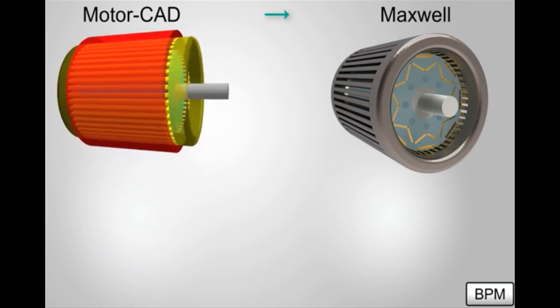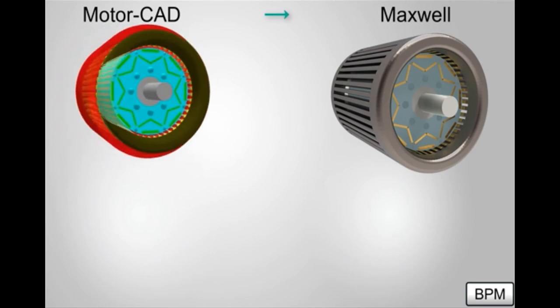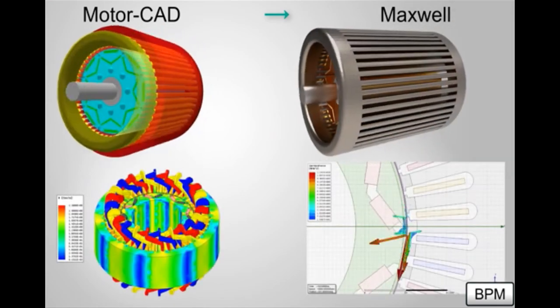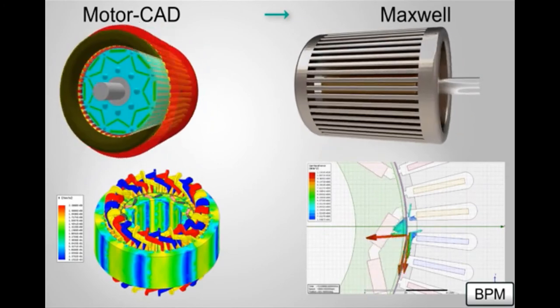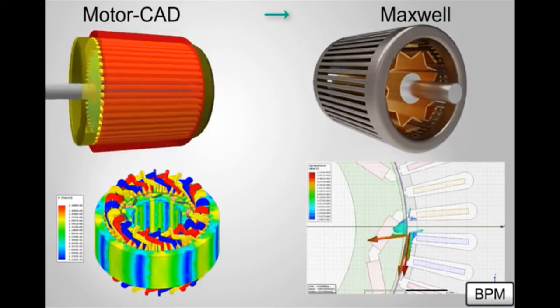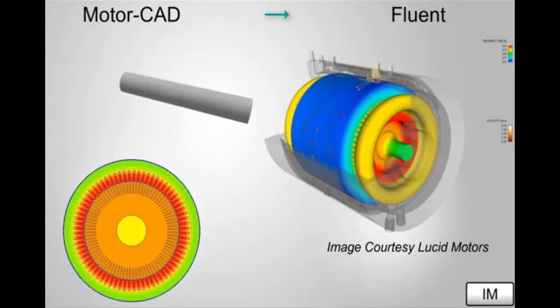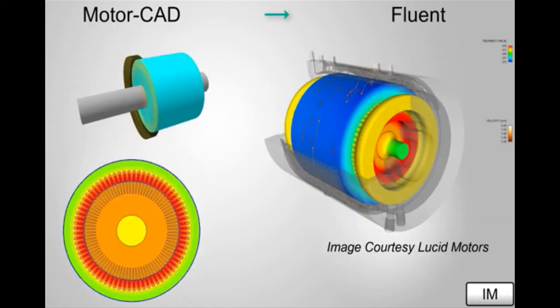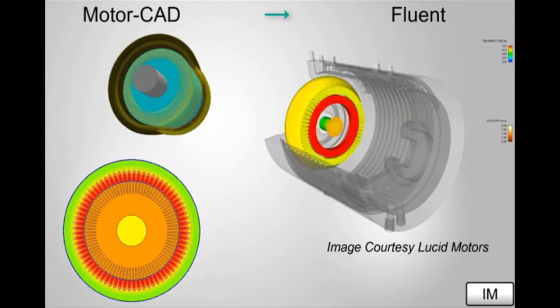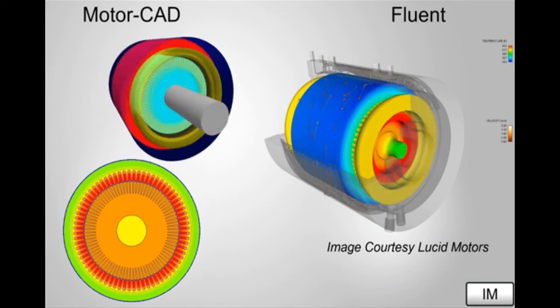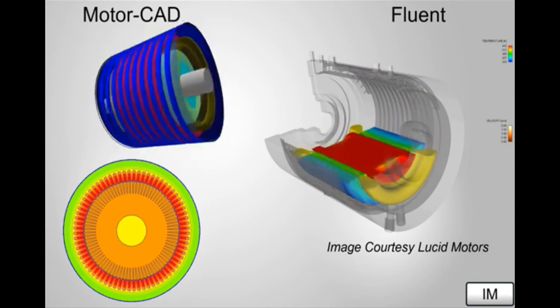When the multiphysics analysis in MotorCAD results in an optimal design concept, it's exported to ANSYS-MAXWELL for detailed 2D or 3D electromagnetic simulations. The losses calculated in ANSYS-MAXWELL are transferred to perform advanced thermal and structural analysis in ANSYS-FLUENT and ANSYS-MECHANICAL respectively.